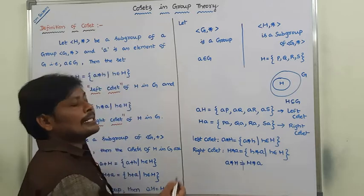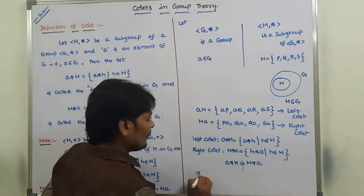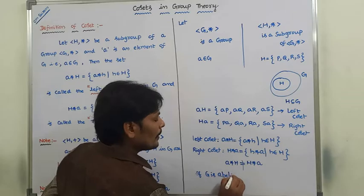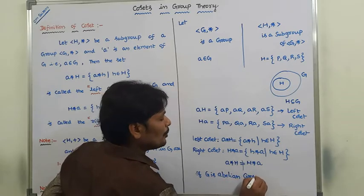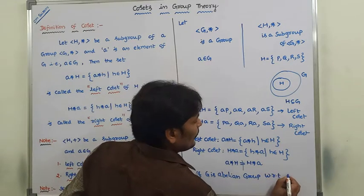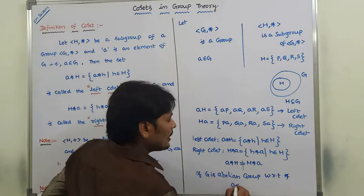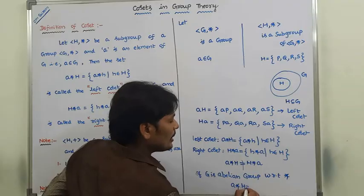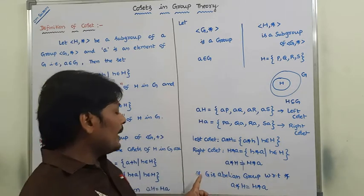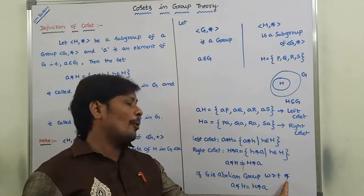When can we say that A·H equals H·A? If G is an abelian group with respect to the binary operation star, then we can say that A·H is equal to H·A.